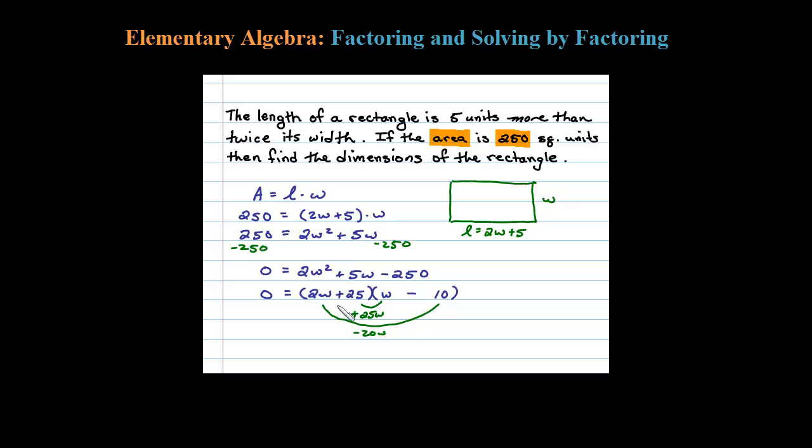This factors. Let's erase this and continue. Once you have a factor, you set each factor equal to 0, so 2W plus 25 equals 0, or W minus 10 equals 0.